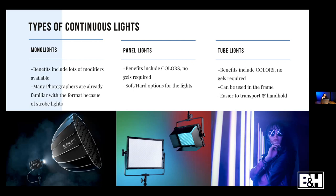A big benefit to transitioning to continuous light if you're a photographer already using strobes is that monolights are a familiar format. Many photographers are already familiar with that form factor, and having a Bowens mount is really important because you can put so many different types of modifiers on it. You may even already have modifiers you've invested in — similar to having Canon lenses and using an adapter with a Sony camera.